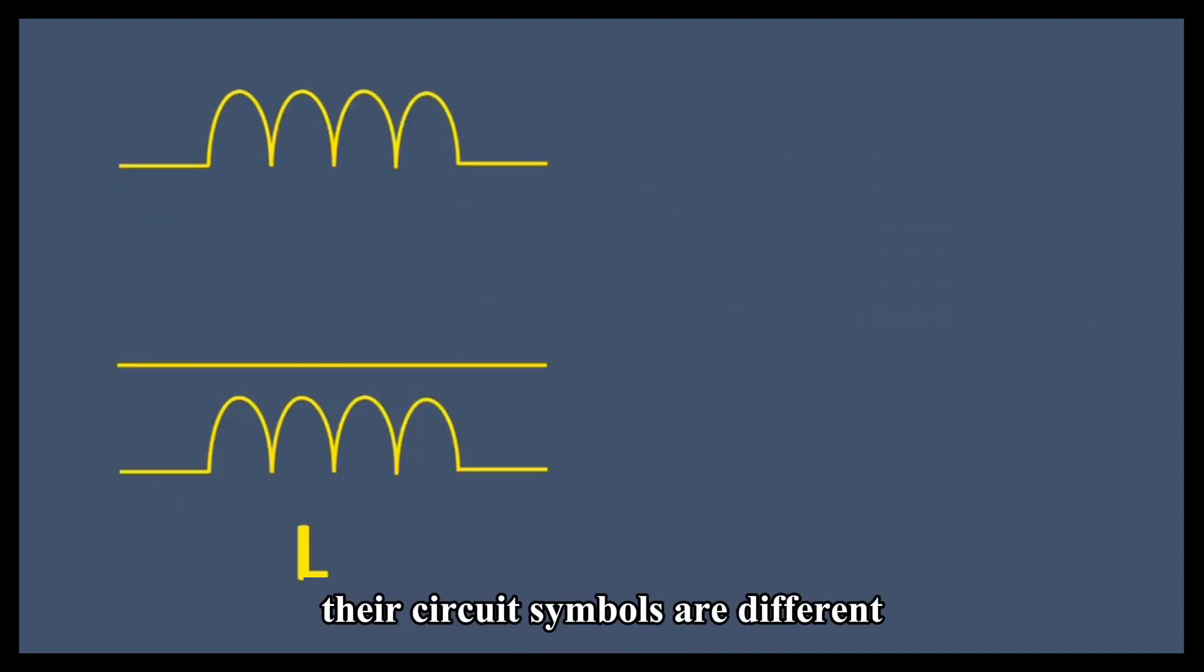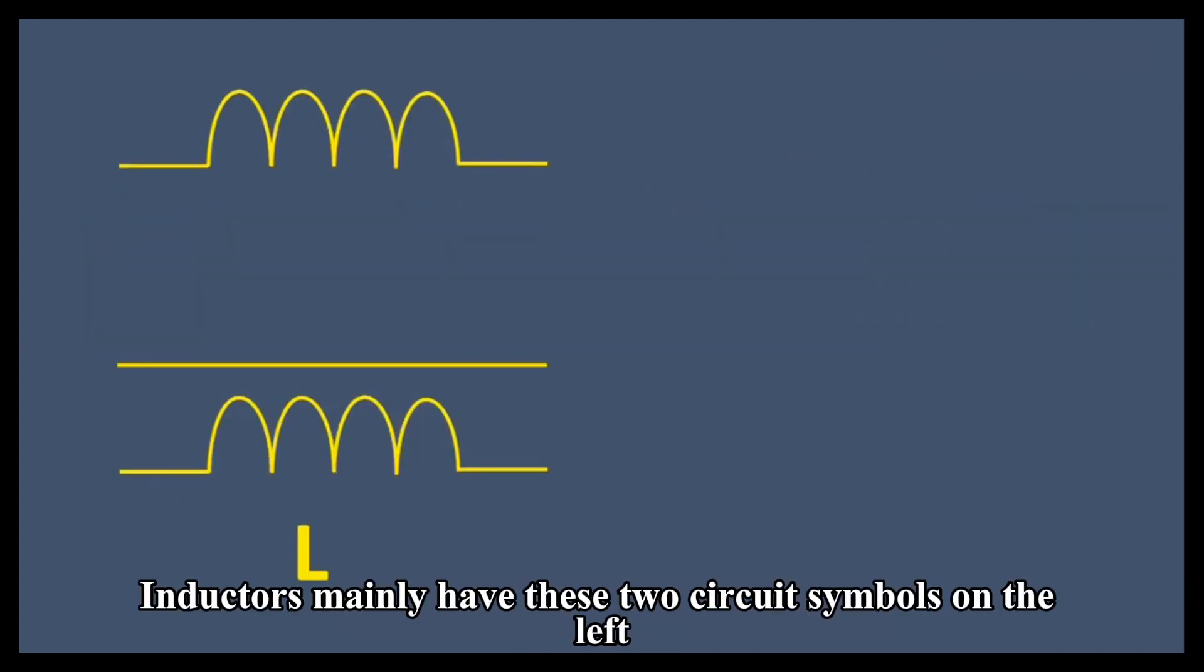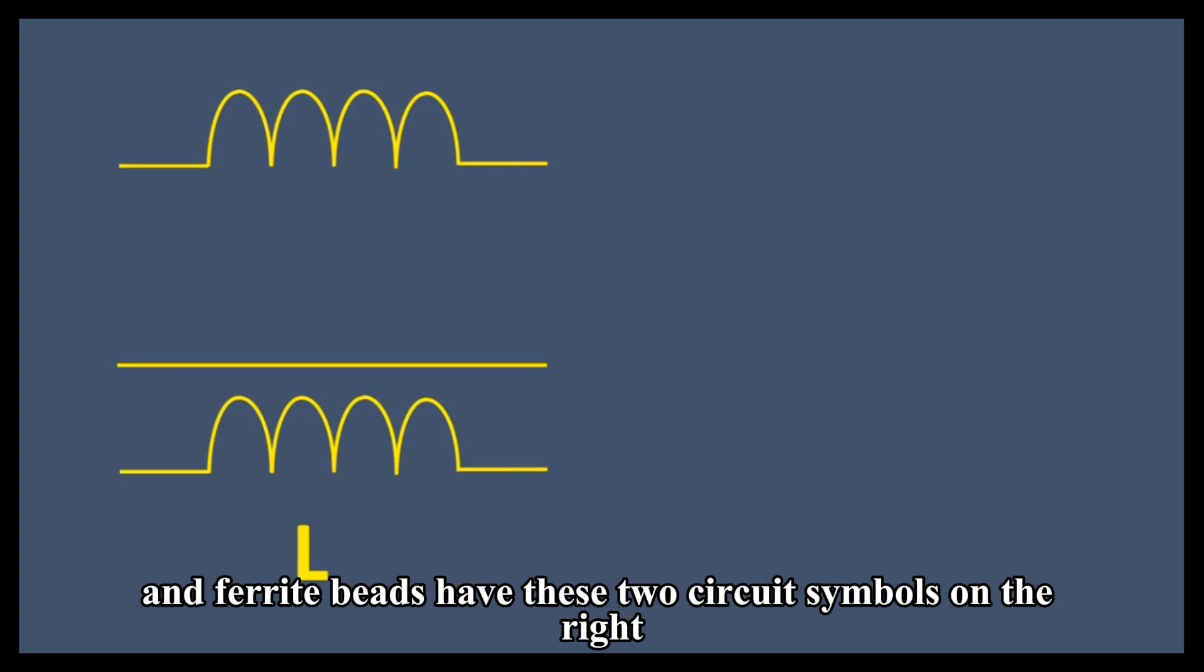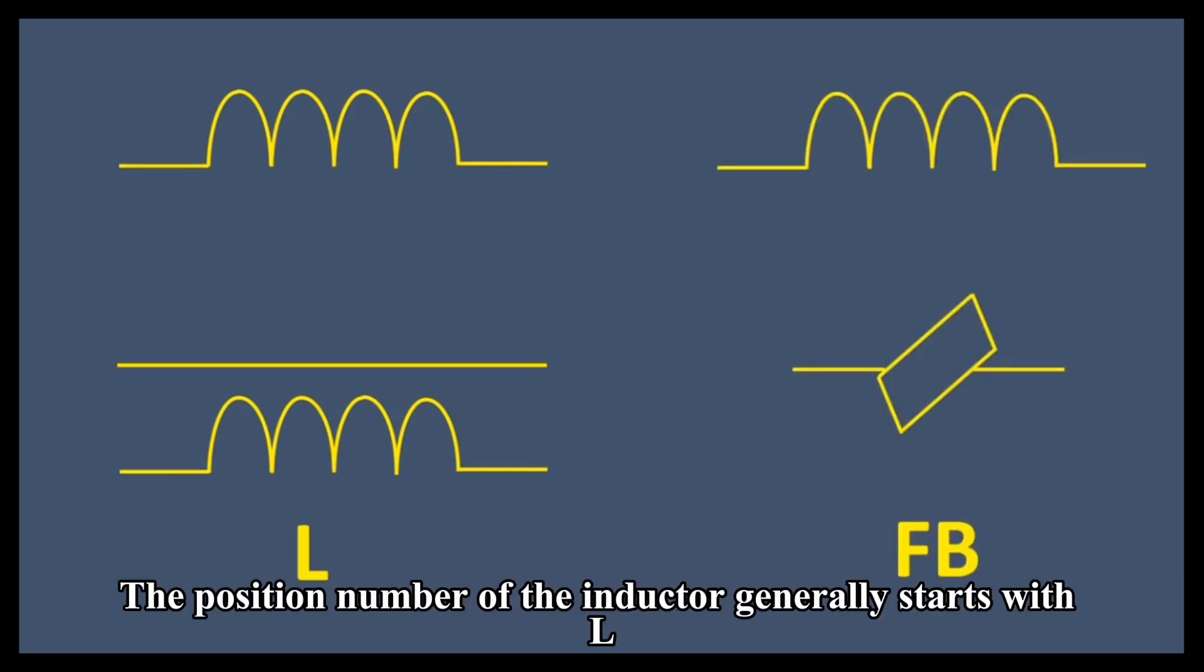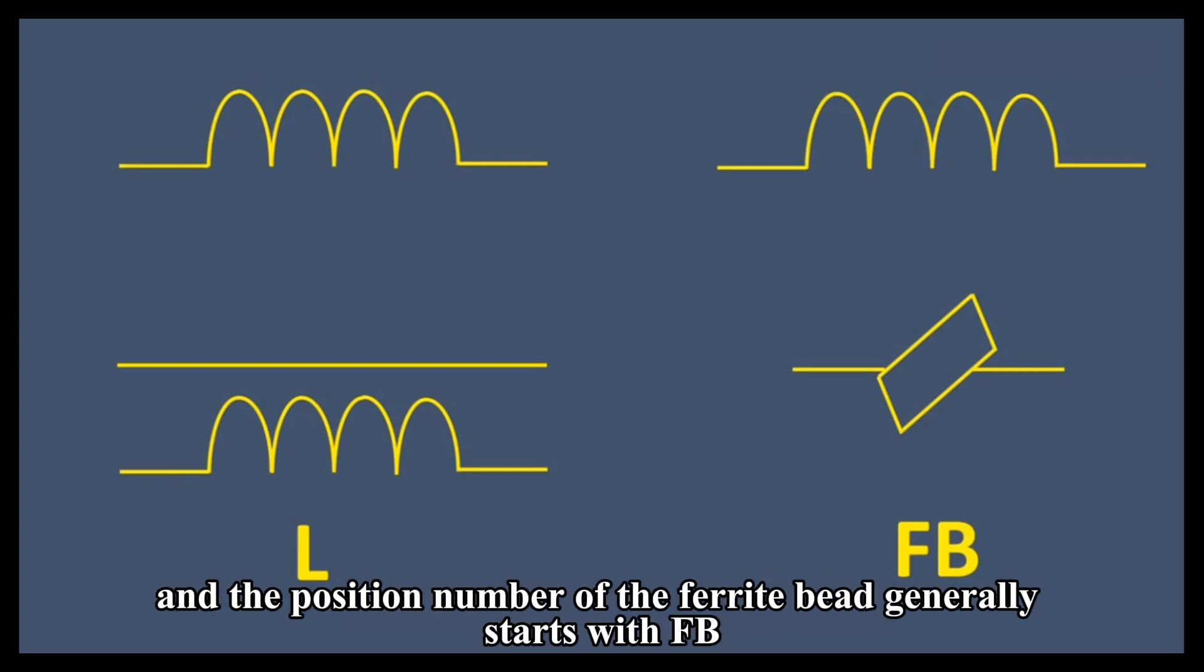Fourthly, their circuit symbols are different. Inductors mainly have these two circuit symbols on the left, and ferrite beads have these two circuit symbols on the right. The position number of the inductor generally starts with L, and the position number of the ferrite bead generally starts with FB.